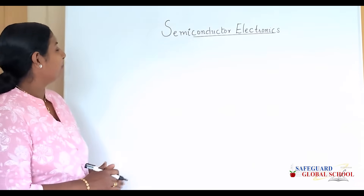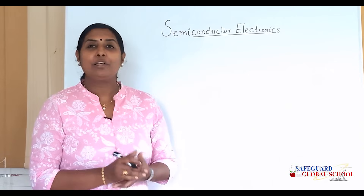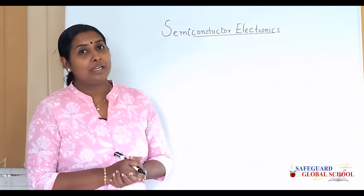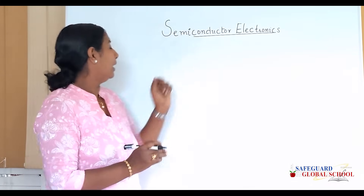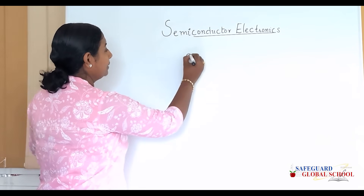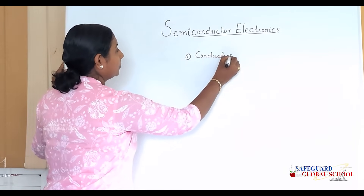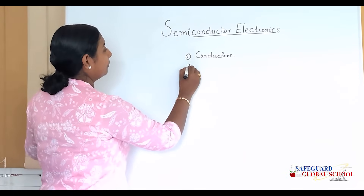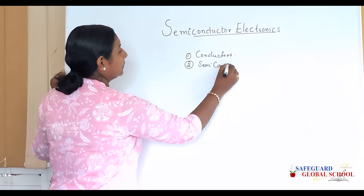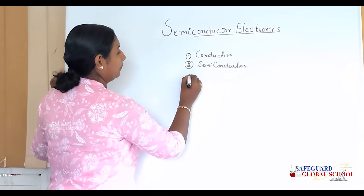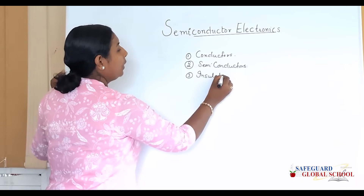Hello everyone, today we will be dealing with semiconductor electronics. We know different solids behave differently to the flow of current. There are three categories of materials: conductors, semiconductors, and insulators.